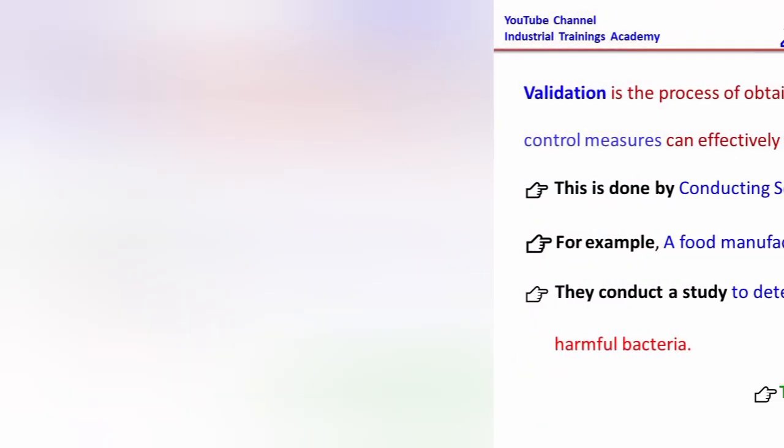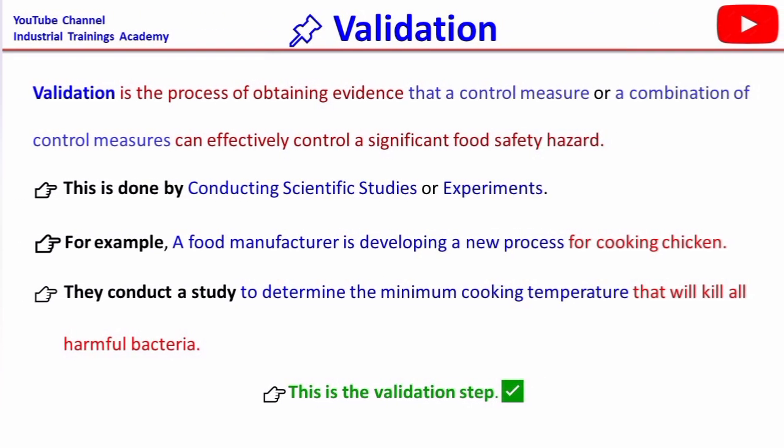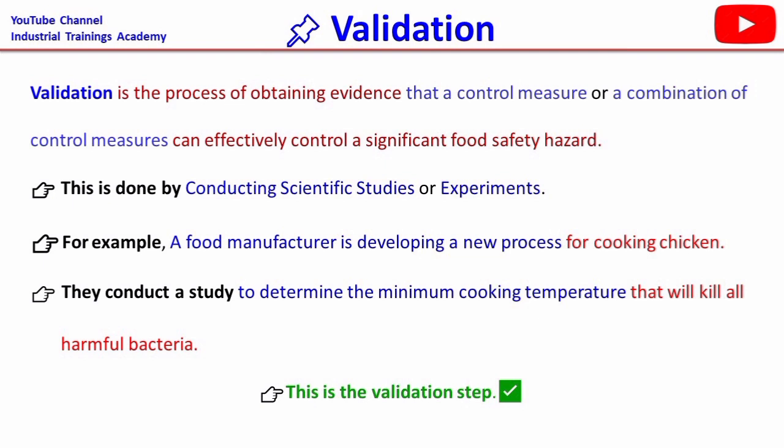Validation is the process of obtaining evidence that a control measure or a combination of control measures can effectively control a significant food safety hazard. This is done by conducting scientific studies or experiments. For example, a food manufacturer is developing a new process for cooking the chicken, so they conduct a study to determine the minimum cooking temperature.